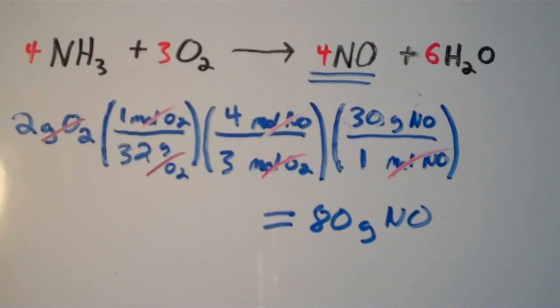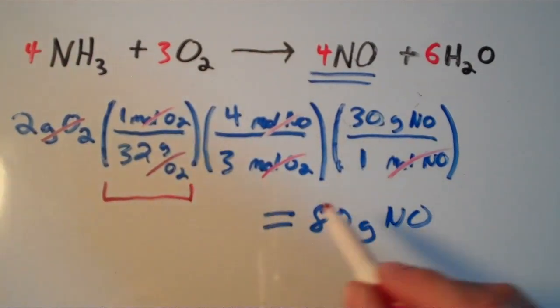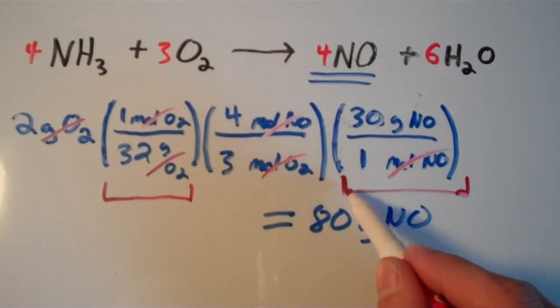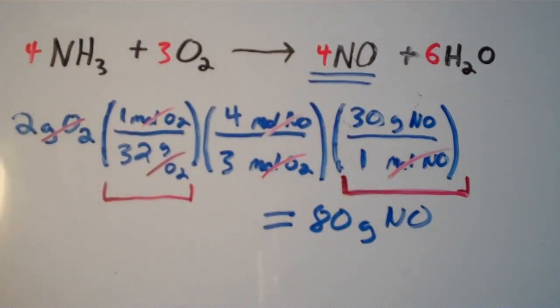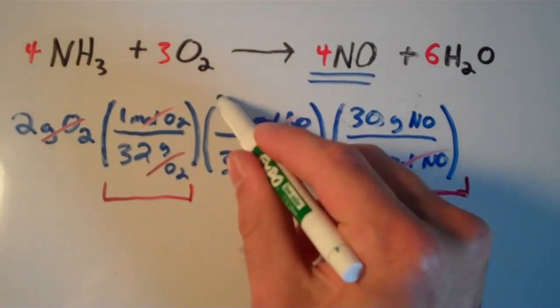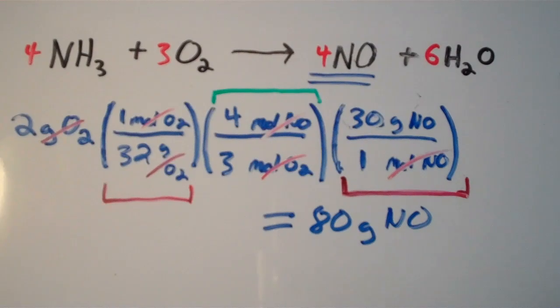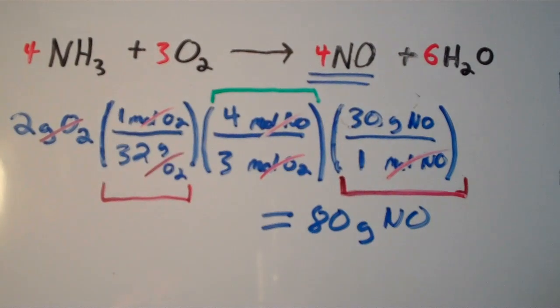Notice that we have to have a mass to mole conversion here, and then a moles to mass conversion at the end. In the middle is where we make our mole to mole conversion. So this is how to carry out a mass to mass conversion. These are more common than mole to mole conversions, and the reason is because they're more practical.